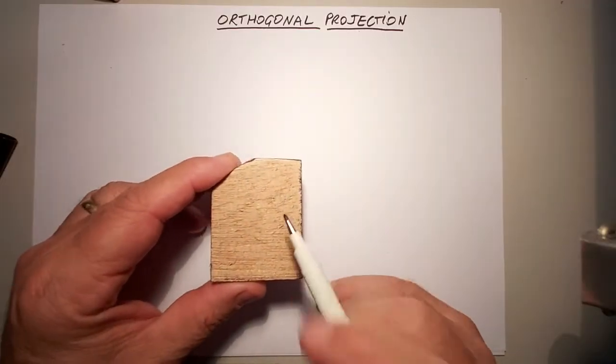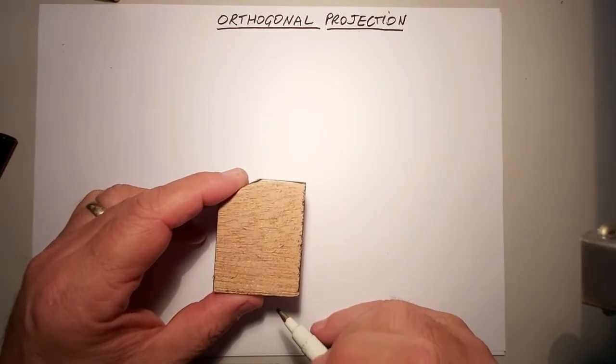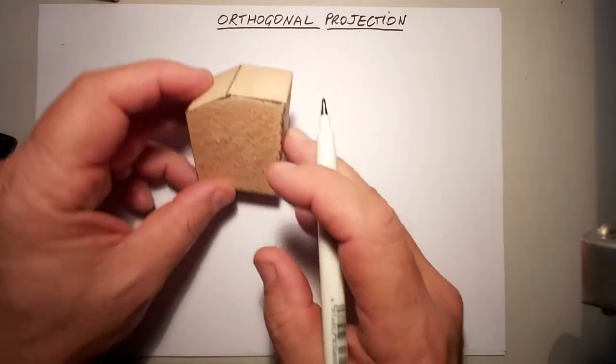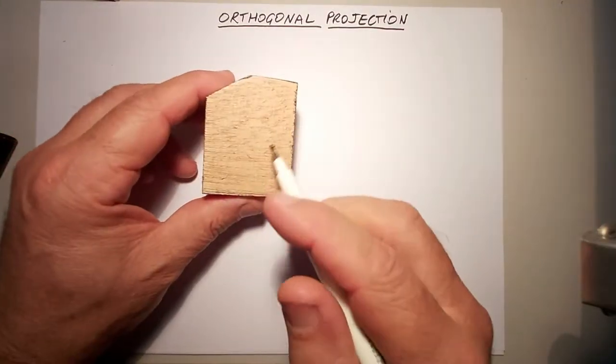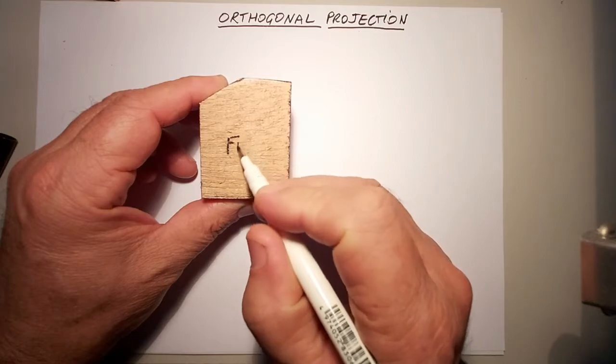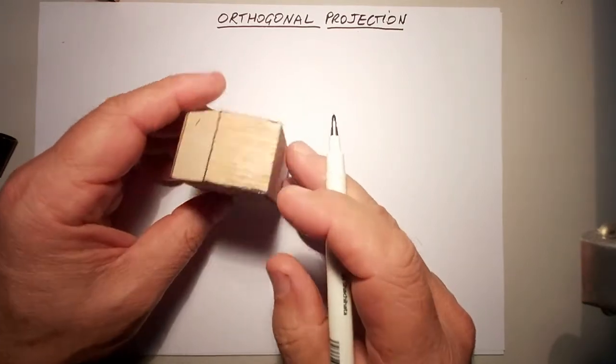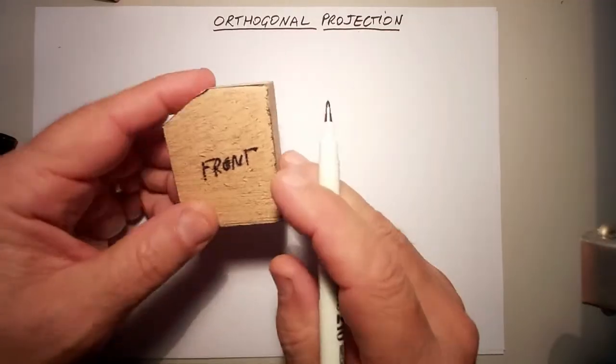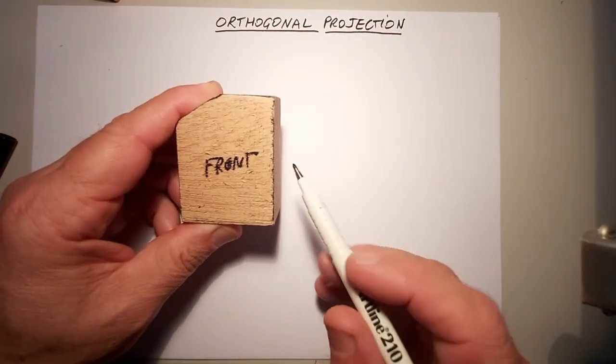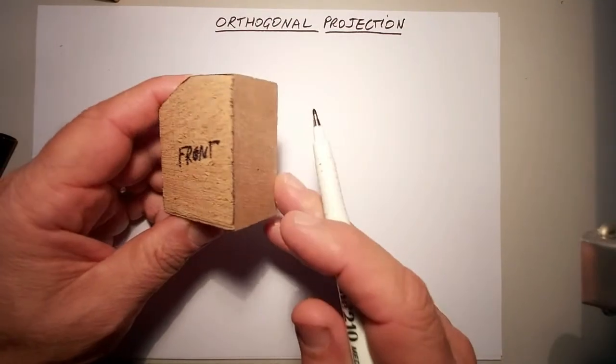So the first thing that we do is start with a front view. And you position the front view somewhere, so you're going to leave yourself enough room for a top view. So I'm going to make this here to be the front. That'll be the top view over here. And then we're going to look at it from the right hand side, which is from this direction.